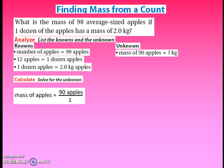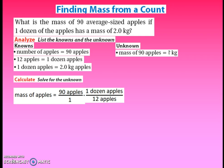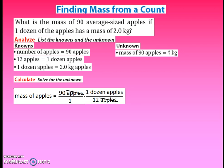We're going to take our given — 90 apples — and put it over one, making a fraction, because we're going to use conversion factors, which are fractions, to convert between different units without changing the overall value. We need those equivalencies set up as fractions so that units we have reduce out, leaving us with the units we want. We currently have apples, but we're trying to get to kilograms. Looking at our knowns, apples relates to dozens — so if we put apples in the denominator of our next conversion factor, the apples cancel out, leaving us with dozens of apples.